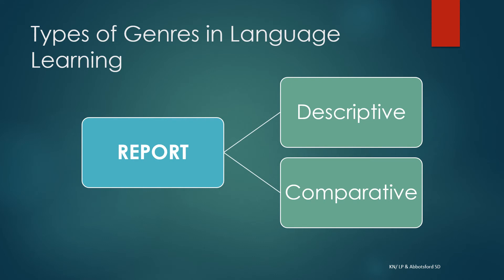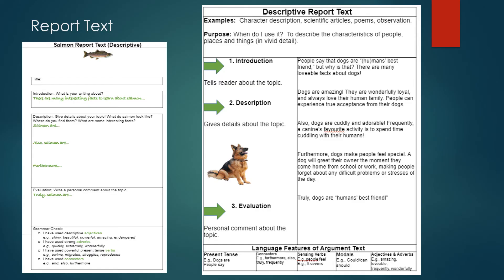The purpose of report text is to present information to classify living or non-living things. Alternately, it can be used to describe the characteristics of people, places, and things. Here are two different examples for report text: one is a mentor text about dogs outlining the different parts of a report text, and the other is a graphic organizer intended to help students write their own report text about salmon.